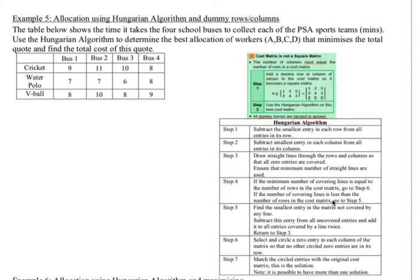In this video we'll be looking at using the Hungarian algorithm for minimizing when there is a dummy row or column required. Now when do you need a dummy row or column? Well let's have a look.